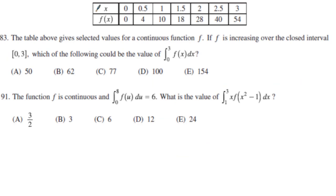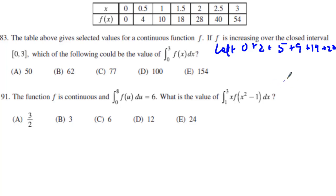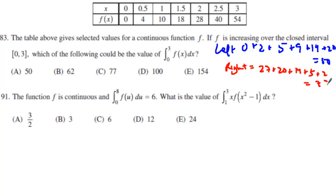Number 83 — they give me a table and I'm looking for the Riemann sum from 0 to 3 on a continuous interval. For the left Riemann sum, I multiply each value (0, 4, 10, 18, 28, 40) by 0.5, getting a total of 50. For the right Riemann sum, starting with 54 times 0.5 equals 27, then plus 20, 14, 5, and 2, giving 77. The actual value will be right in the middle: 62.